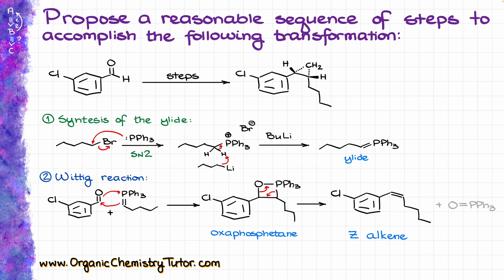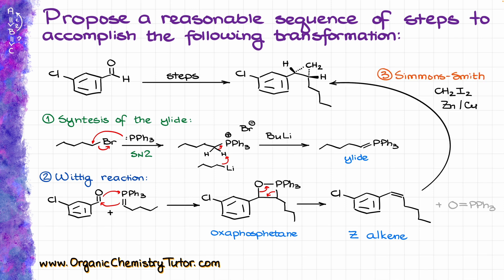Now, once we have our alkene, the last part is the Simmons-Smith reaction, which is typically done by reacting diiodomethane with a zinc-copper alloy, usually in an ultrasonic bath. That generates a corresponding intermediate often called a carbenoid — essentially a molecule where zinc inserts itself between carbon and iodine. As mentioned before, this is a concerted mechanism, so we are adding our CH₂ to the alkene in one step without any intermediates. Since the final product is a chiral molecule, we are going to get it plus the corresponding enantiomer, because the carbenoid in the Simmons-Smith reaction can attack from either face of the molecule.